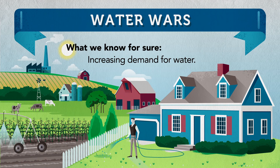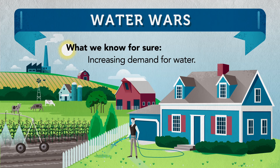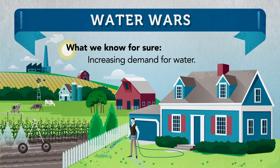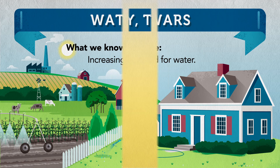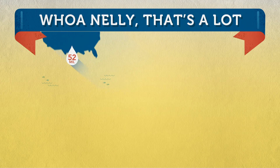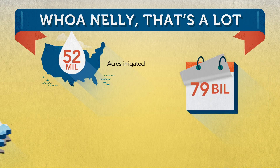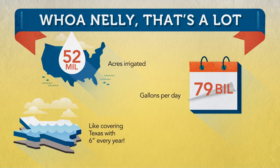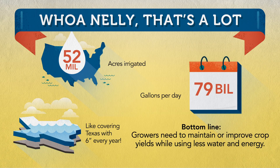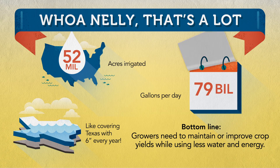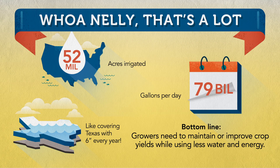There is increasing competition for every gallon of water in today's world. With over 79 billion gallons used every day for agriculture irrigation, growers need to improve crop yields while using less water and energy.